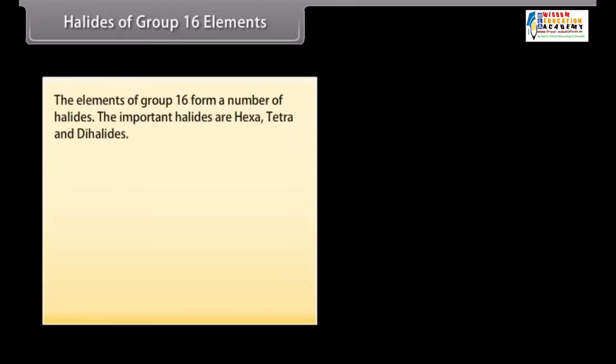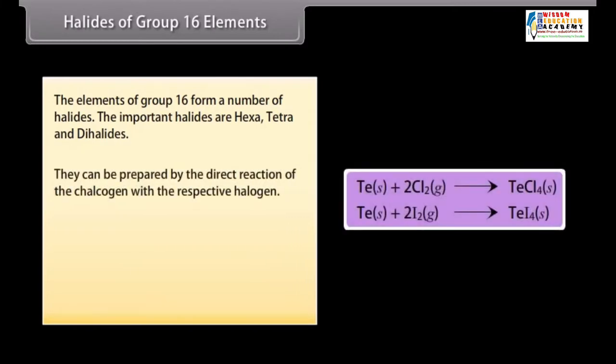Halides of group 16 elements. The elements of group 16 form a number of halides. The important halides are hexa, tetra and dihalides. They can be prepared by the direct reaction of the chalcogen with the respective halogen.